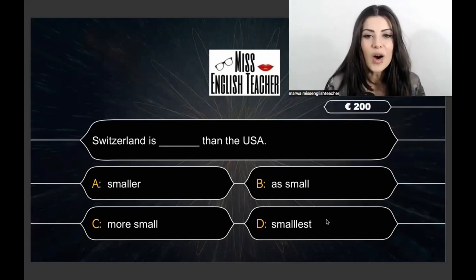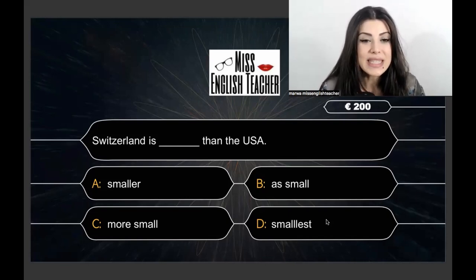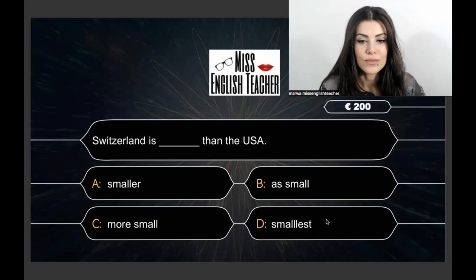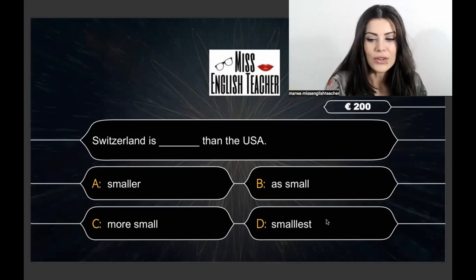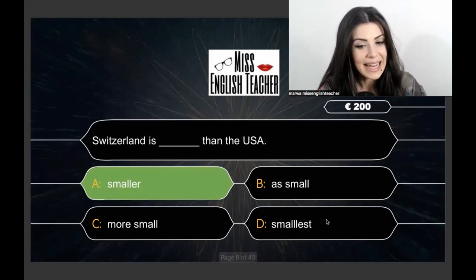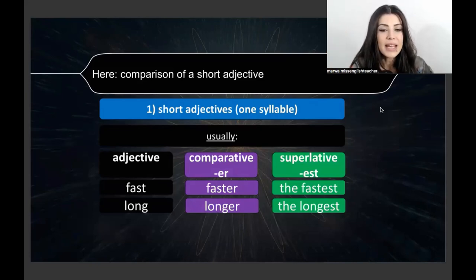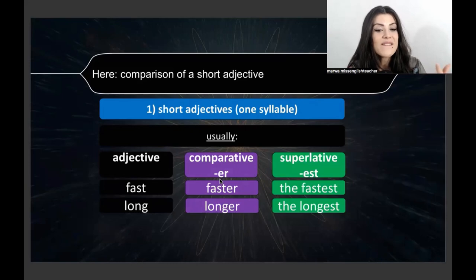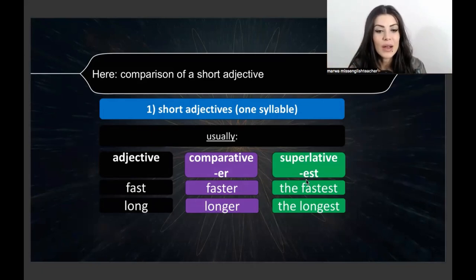Question three: Switzerland is ___ than the USA. The correct answer is 'smaller.' Here we have a comparison with a short adjective — 'small.' With short adjectives like 'fast,' we add -er: faster. For the superlative, comparing one to many, we say 'the fastest.' Long, longer, the longest. You just made 200 euros!